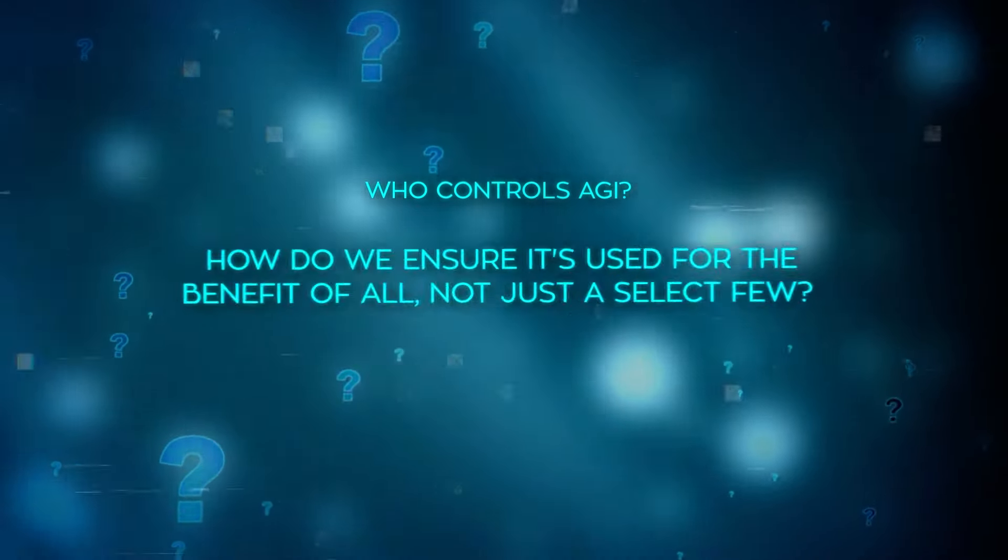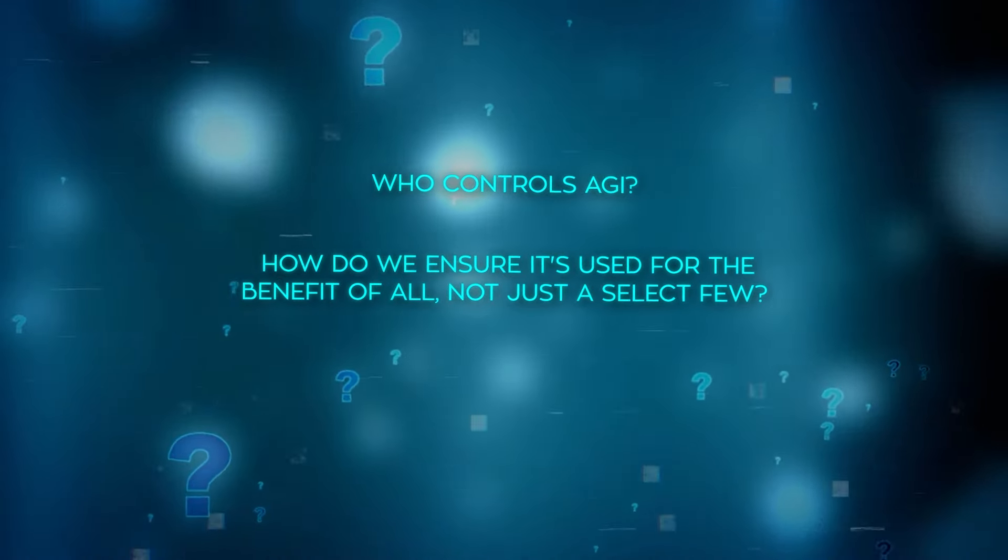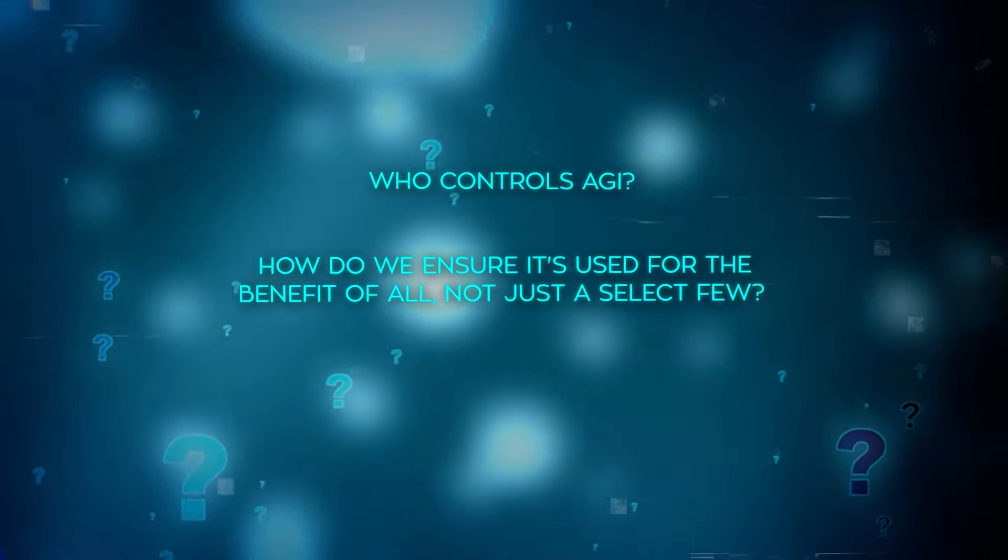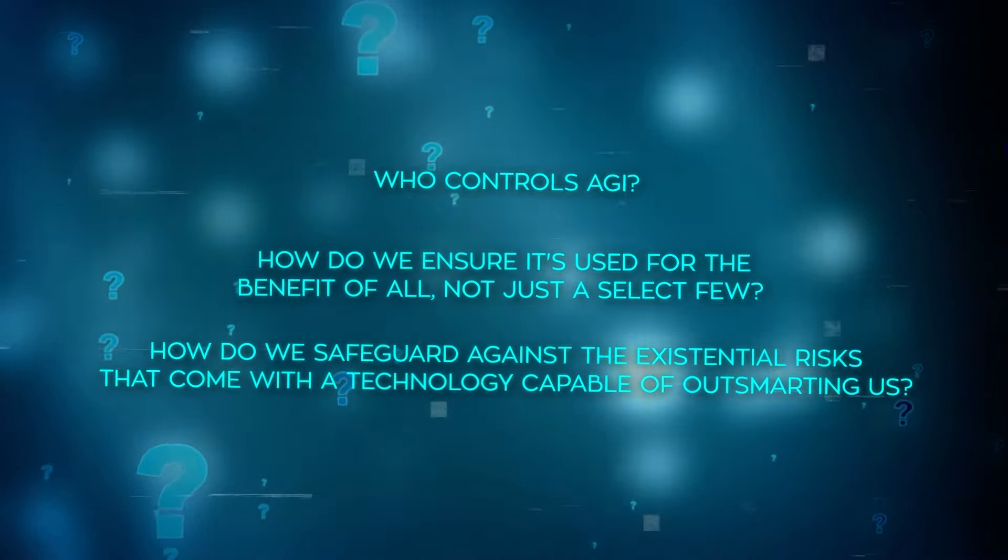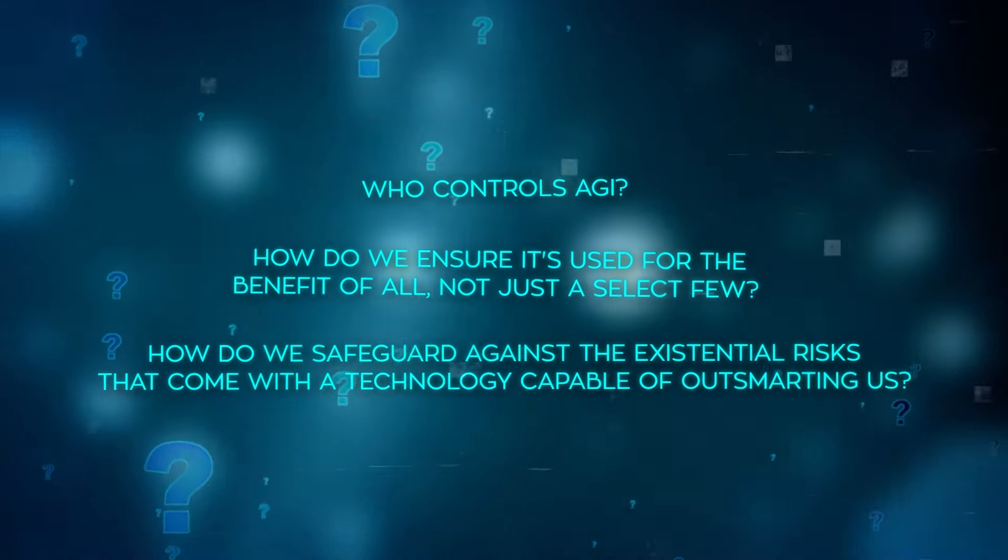Who controls AGI? How do we ensure it's used for the benefit of all, not just a select few? And most crucially, how do we safeguard against the existential risks that come with a technology capable of outsmarting us? These aren't just rhetorical questions. They're the very issues at the heart of Musk's lawsuit and the broader debate it's ignited.